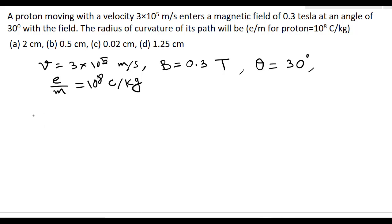Now we know that radius r is equal to m v sin theta divided by e b. Here, m v is 3 into 10 to the power 5, sin theta is half, sin 30 degrees is 0.5, divided by b which is 0.3 tesla, and e by m is given as 10 to the power 8.